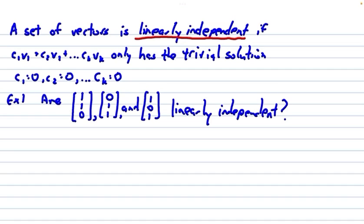What that is saying is, when we solve these problems, if we get zeros for all of our coefficients, it's linearly independent. If we get any other solution, it's linearly dependent.